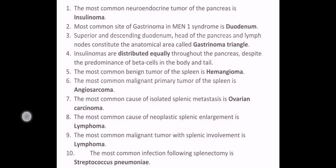The most common benign tumor of the spleen is hemangioma. The most common malignant primary tumor of the spleen is angiosarcoma. The most common cause of isolated splenic metastasis is ovarian carcinoma. The most common cause of neoplastic splenic enlargement is lymphoma, and the most common malignant tumor with splenic involvement is lymphoma.